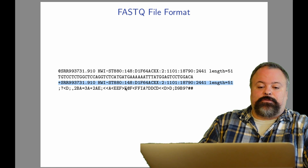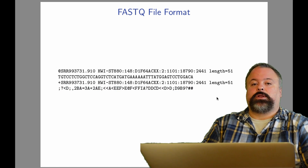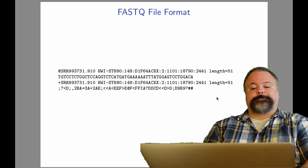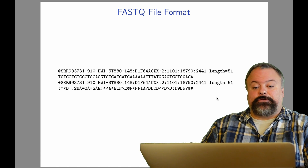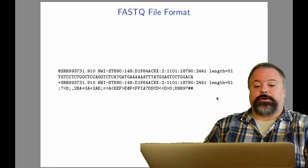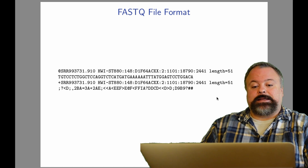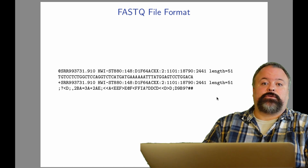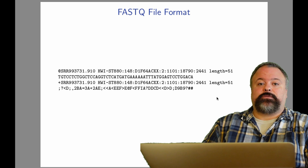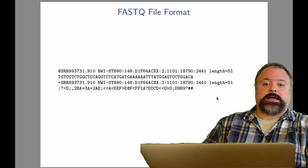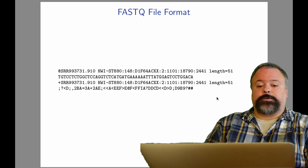The fourth line of the file is probably the most mysterious: the quality score line. The quality string encodes information about the probability of an error in each nucleotide of that read, giving us a sense of how confident the machine was in classifying that particular nucleotide as an adenine, guanine, or whatever.